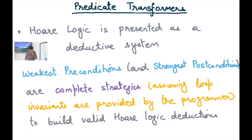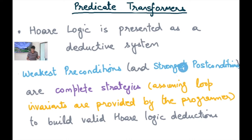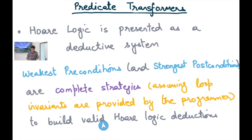There are two types of predicate transformers: weakest preconditions and strongest postconditions. Today I'm going to introduce weakest preconditions. These are complete strategies, unlike Hoare triples, where Hoare logic is a deductive specification just saying if this holds then that holds. This is a strategy — an algorithm to build valid Hoare logic derivations.